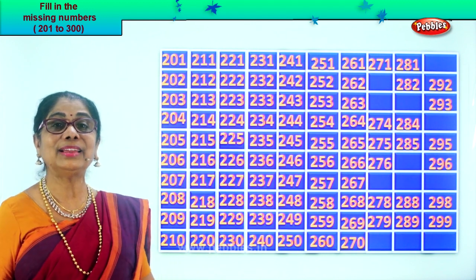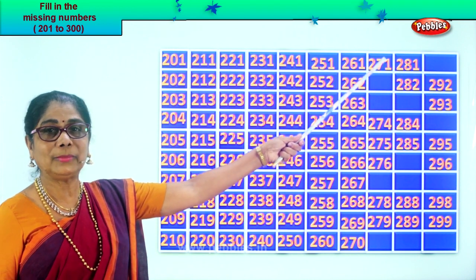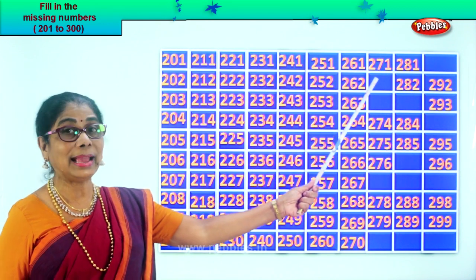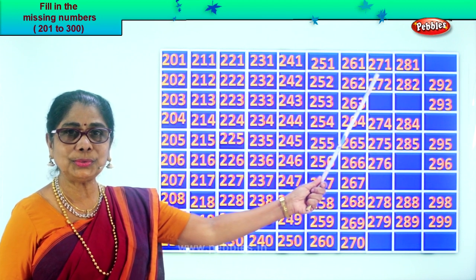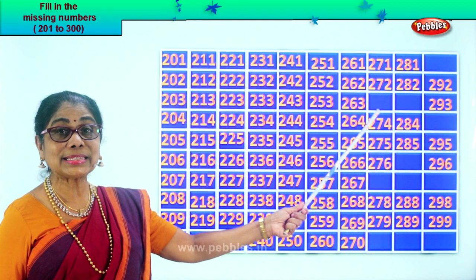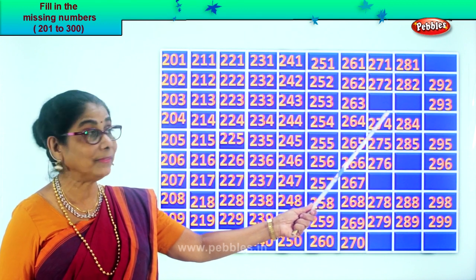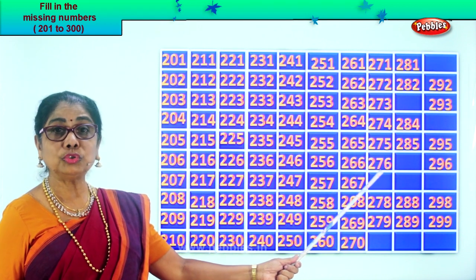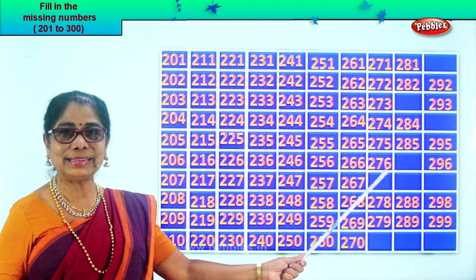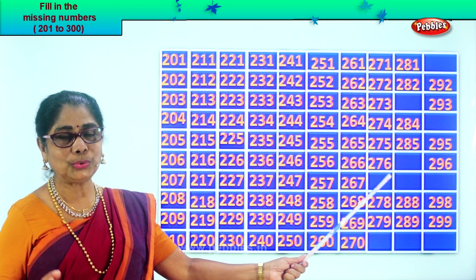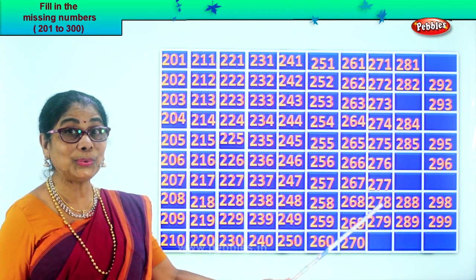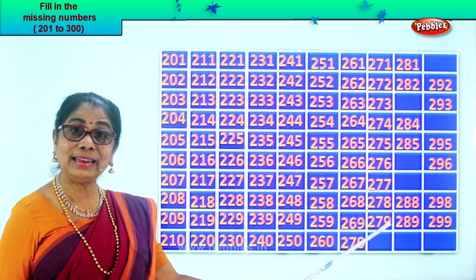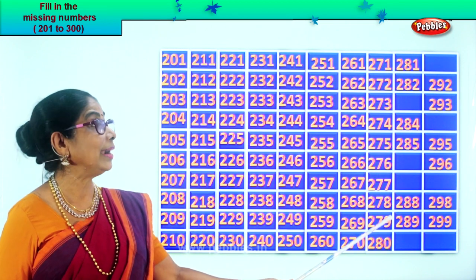After that: two hundred and seventy-one. After seventy-one — seventy-two. Two hundred and seventy-two. After seventy-two — seventy-three. Two hundred and seventy-three. Two hundred and seventy-four. Two hundred and seventy-five. Two hundred and seventy-six. After seventy-six — seventy-seven. Two hundred and seventy-seven. Two hundred and seventy-eight. Two hundred and seventy-nine. After seventy-nine — eighty. So you write two hundred and eighty.